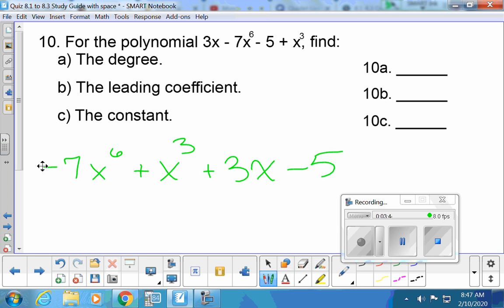Good. The highest power. Six. What would be the leading coefficient? Nope. Negative 7. It's the guy who's in the lead when you're in standard form. And then do you remember the word constant or not? Constant just means that there's no variables with that guy. So that would be the negative 5.